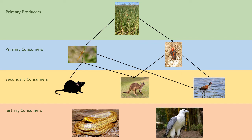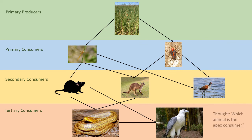The rat is eaten by the bird of prey, while the kangaroo is eaten by the snake. Here we see a tertiary consumer, the snake, eaten by another consumer, the bird of prey. Can you think of the animal that is at the apex consumer level?